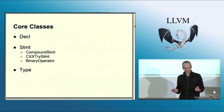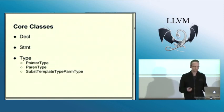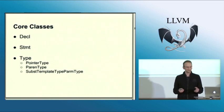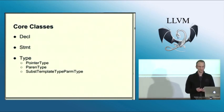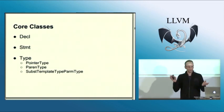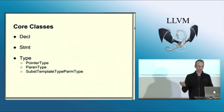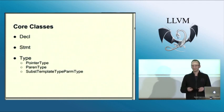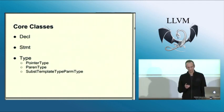Then we have types. Types in C++ are also complex — there are many different types, they can be nested like a pointer type, there are parent types and strange things like substituted template types. Again, the Clang AST is huge because of C++.